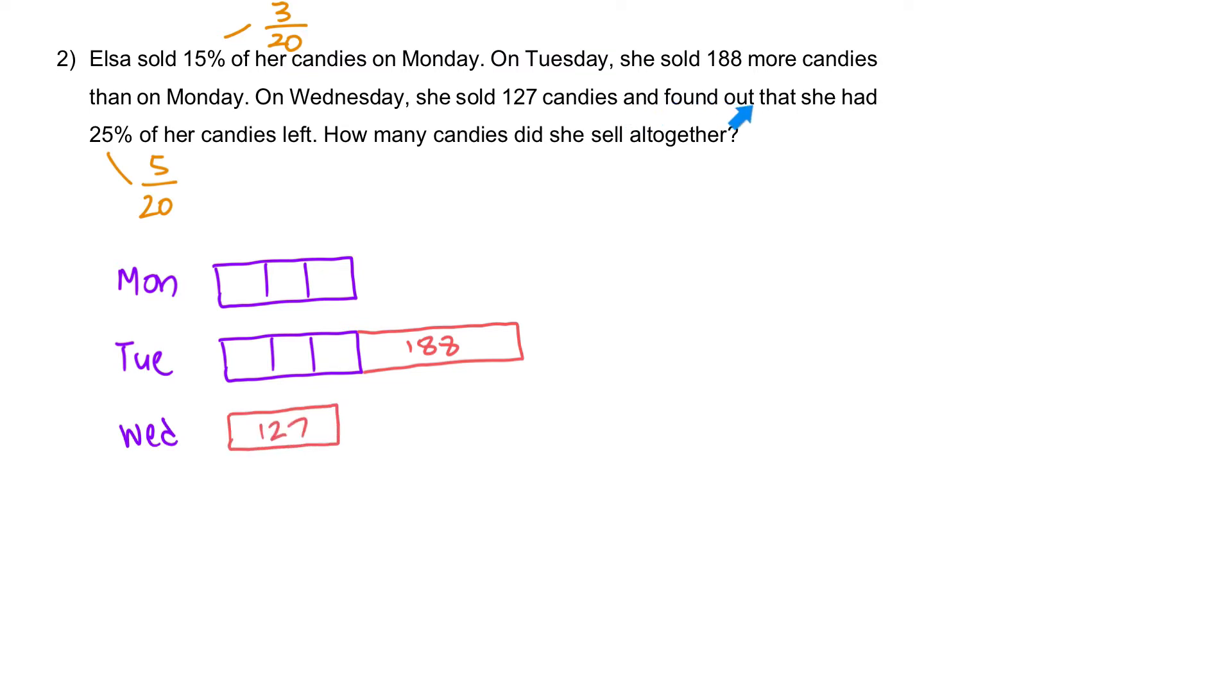And found out that she had 5 out of 20 of her candies left. So she's left with 5 units out of the 20. Given the denominator, it's 20 units. So the total here must be 20 units.